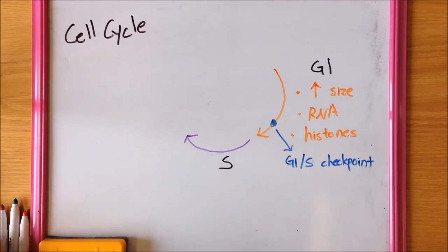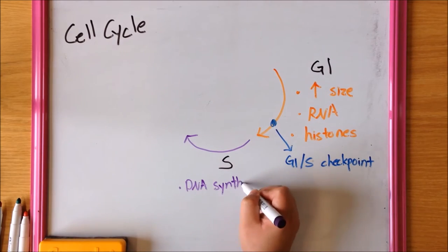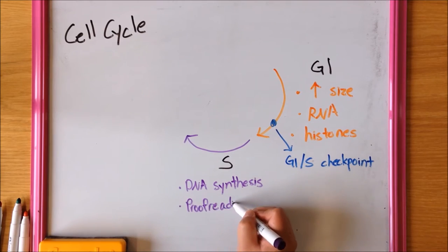Phase 2 is the S phase. The entire genome is replicated via DNA synthesis and DNA is proofread and repaired if damage is present.